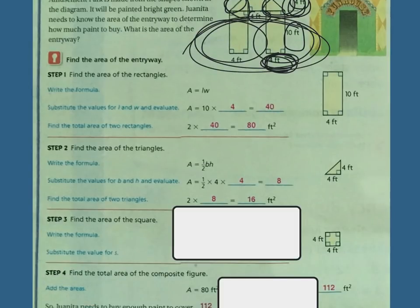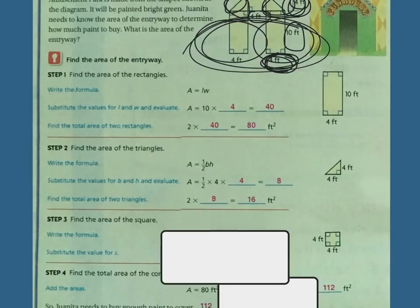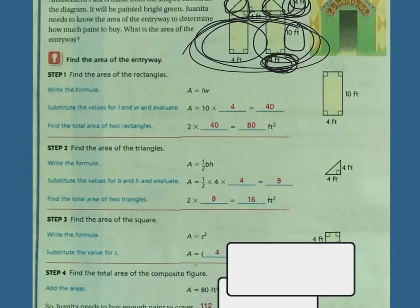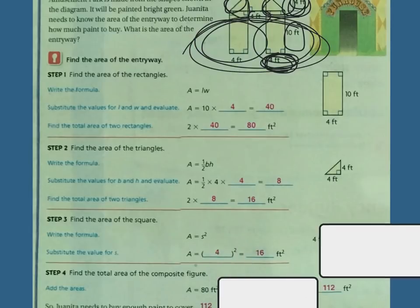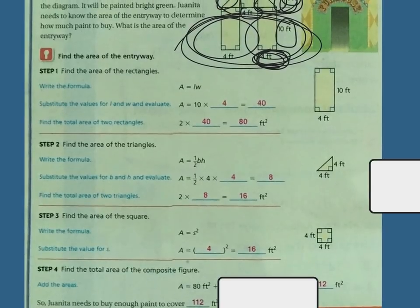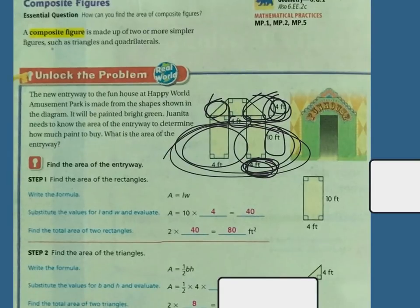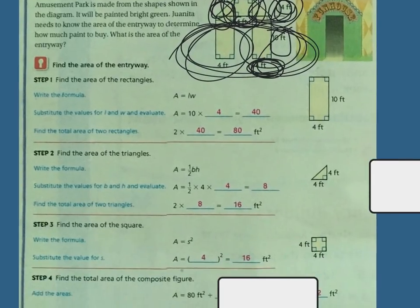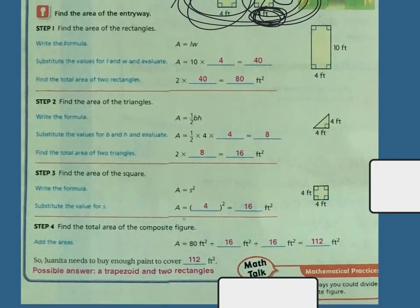Now all I have to find is the area of that little square up there. My formula for that is base times height, or S squared — the two sides together. One side was 4, the other side was 4, so 4 squared is 16 square feet. Now I have all the little pieces: 16 square feet for the square, 80 for the two rectangles, and 16 for the two triangles. So 80 plus 16 plus 16 equals 112 square feet — in order to buy enough paint, we need 112 square feet.